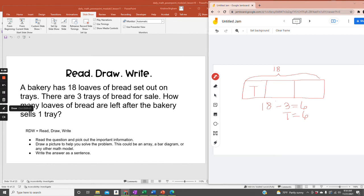The second part of the question says, how many loaves of bread are left after the bakery sells one tray? That means it's a subtraction equation. So one tray is 6. He's starting with 18, and he's subtracting, not dividing, subtracting 6. 18 minus 6 equals 12.